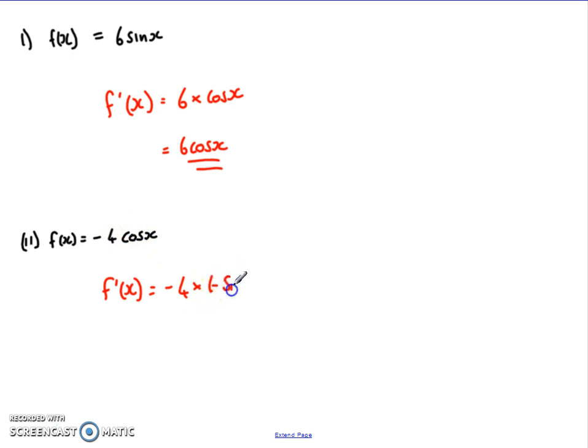Simplify it then from that. Negative 4 times negative sine x. Two negatives cancel, and I get 4 sine x. So there's the derivative of that. Fairly straightforward if you just remember the rule. Cos goes to minus sine, sine goes to cos.